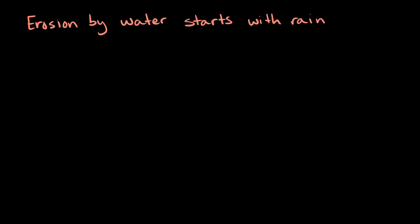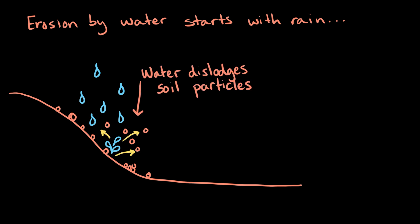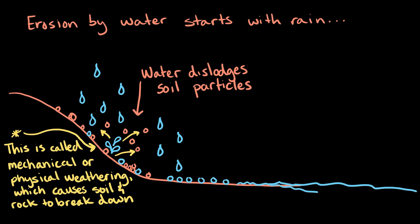Erosion by water starts with rain. During a rainstorm, the impact of raindrops is actually powerful enough to dislodge soil particles and damage soil structure. This is called mechanical weathering. As rainwater starts to accumulate, it can erode a landscape by moving soil and rock particles, called sediment, away from their original location.